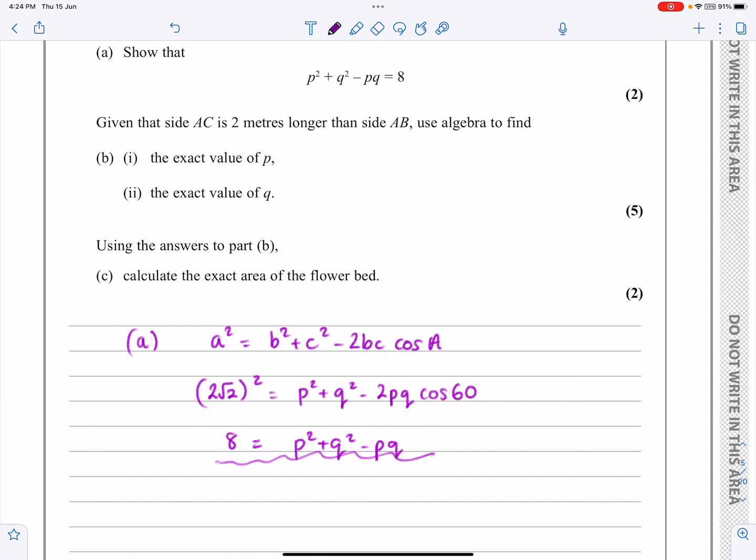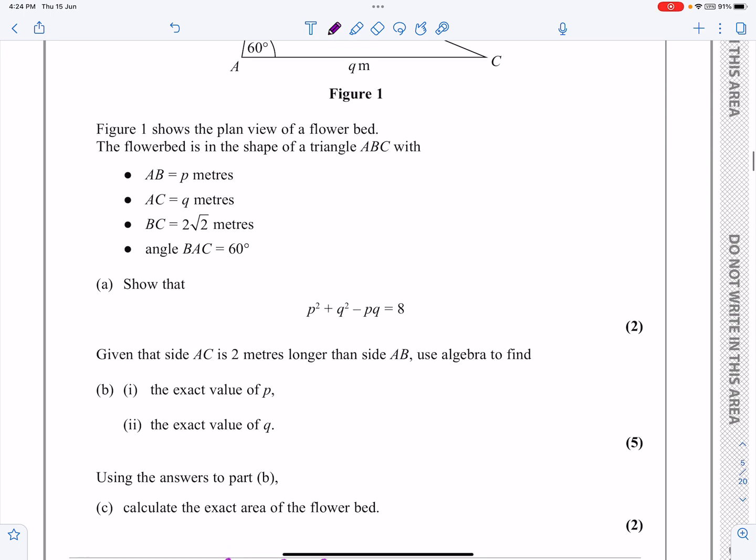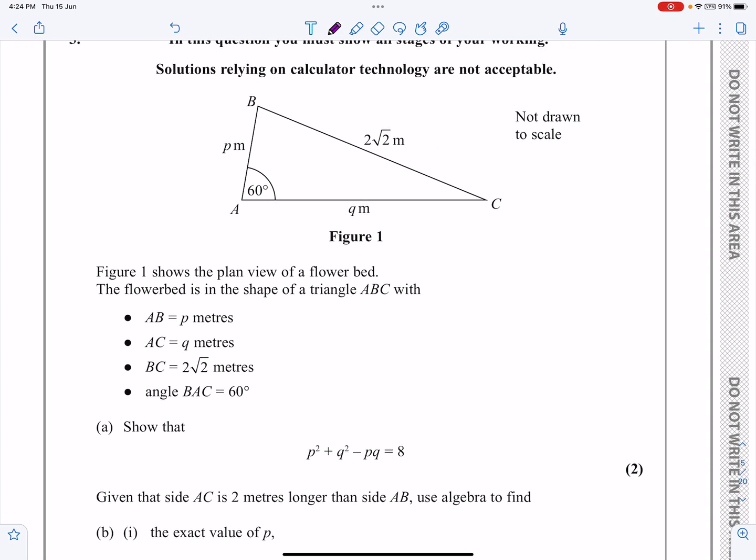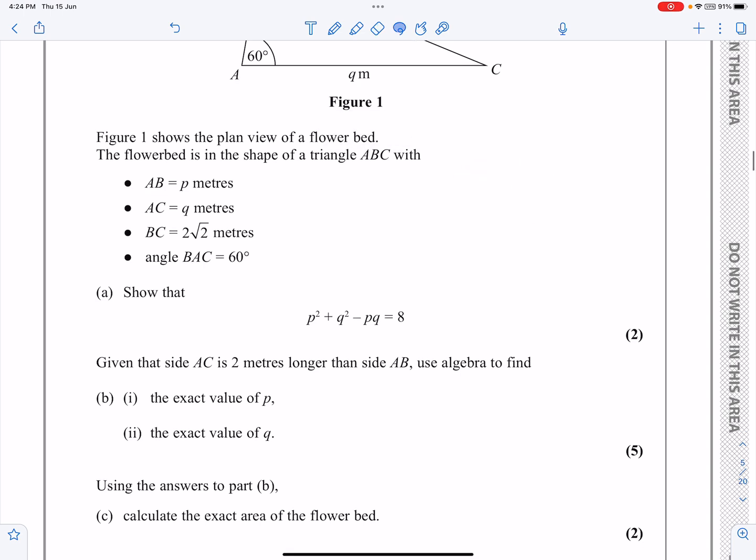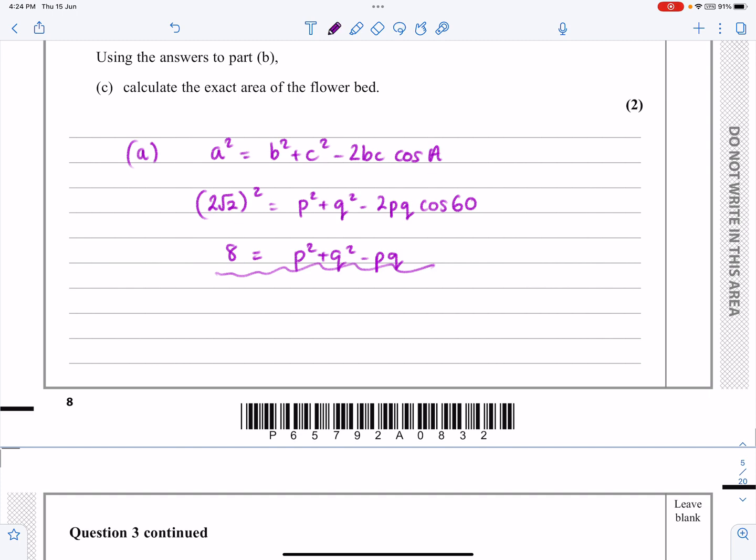It says given that AC is two metres longer than AB. So if AC is two metres longer, this one is two metres longer than that. That's telling me that Q is P + 2. Given that, can we find the exact value of P and then the exact value of Q? Let's have a go at doing that. For part B, let's start off with that. Q is equal to P + 2.